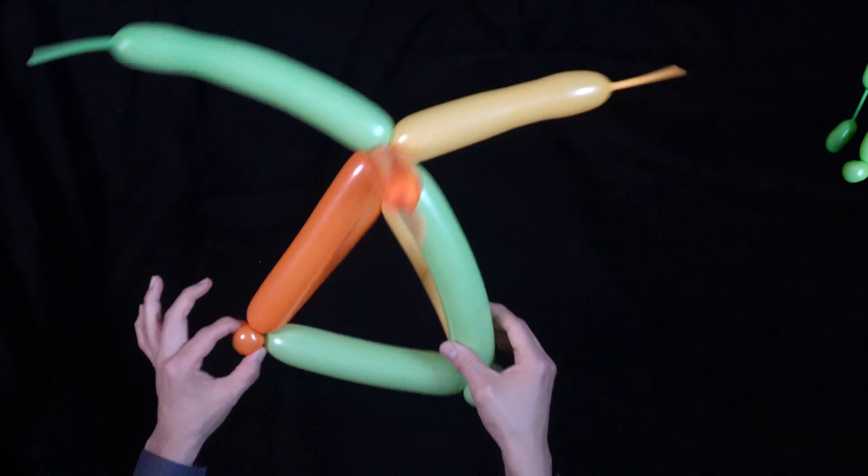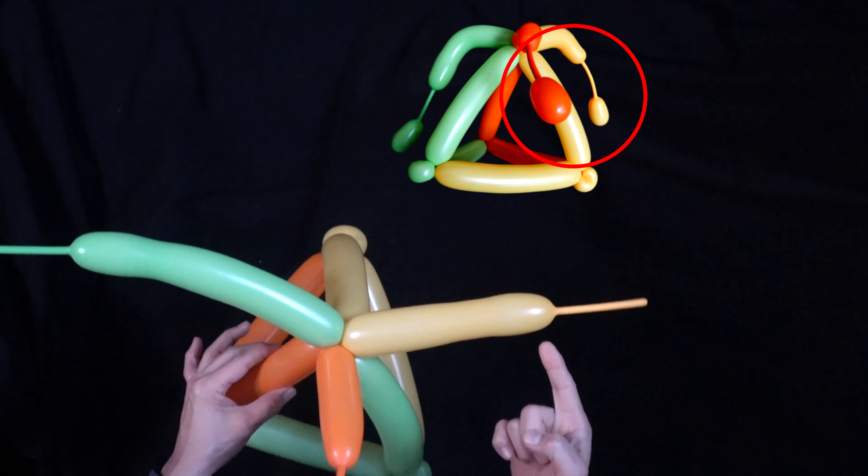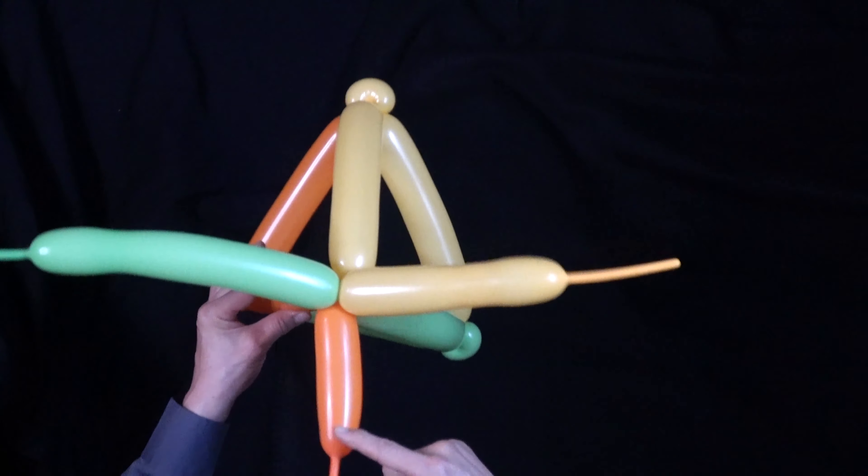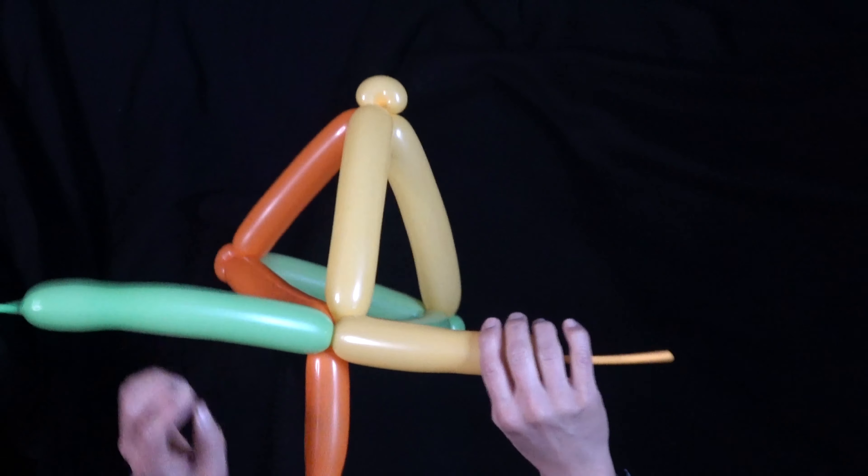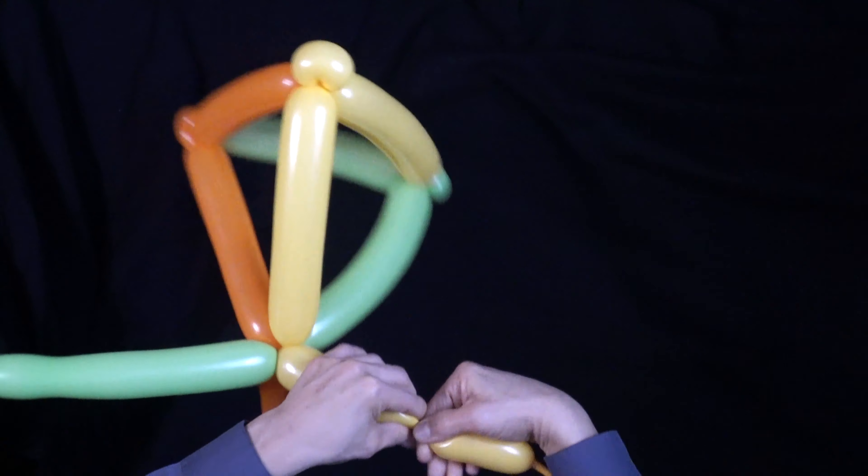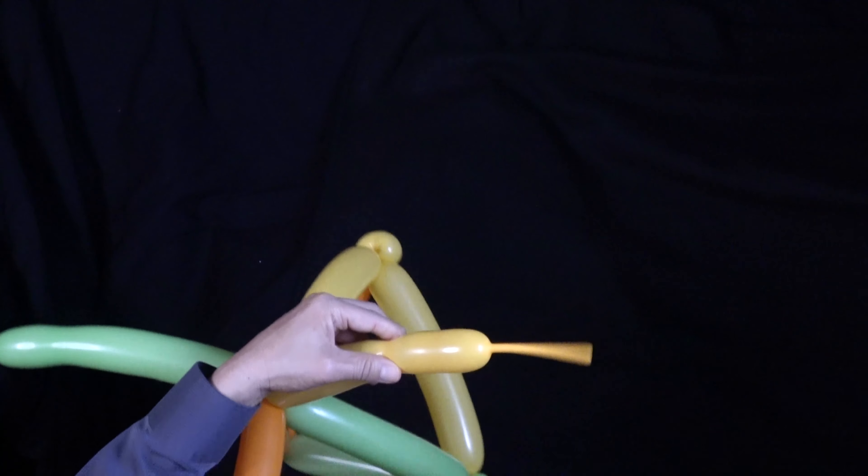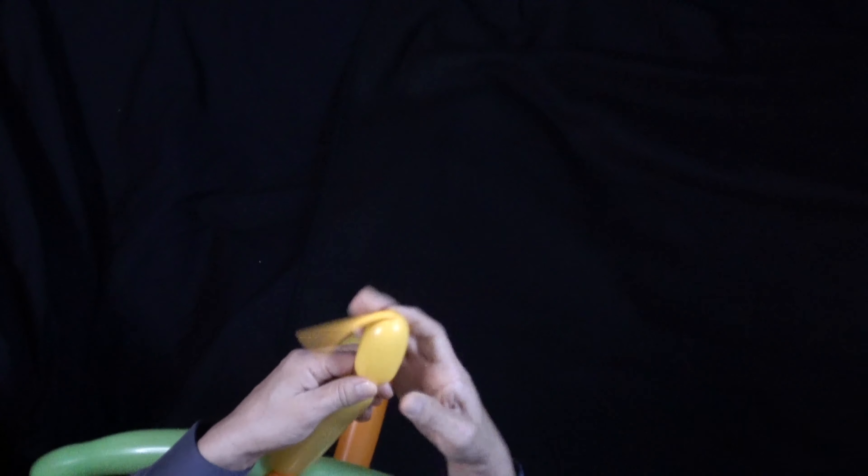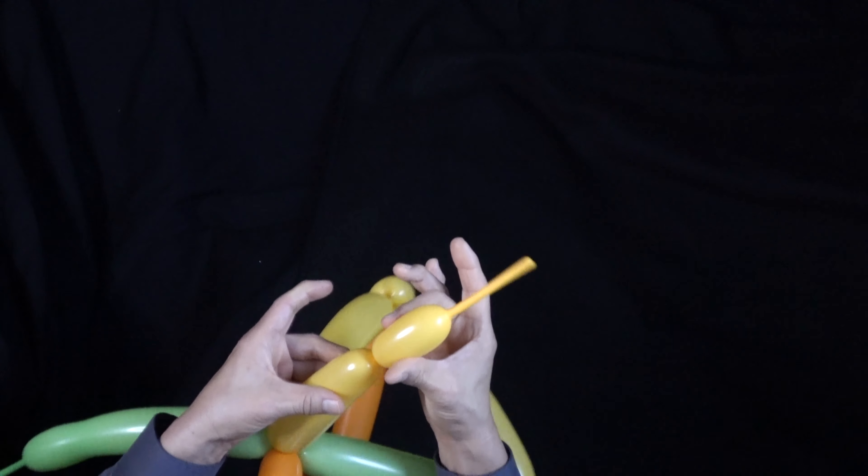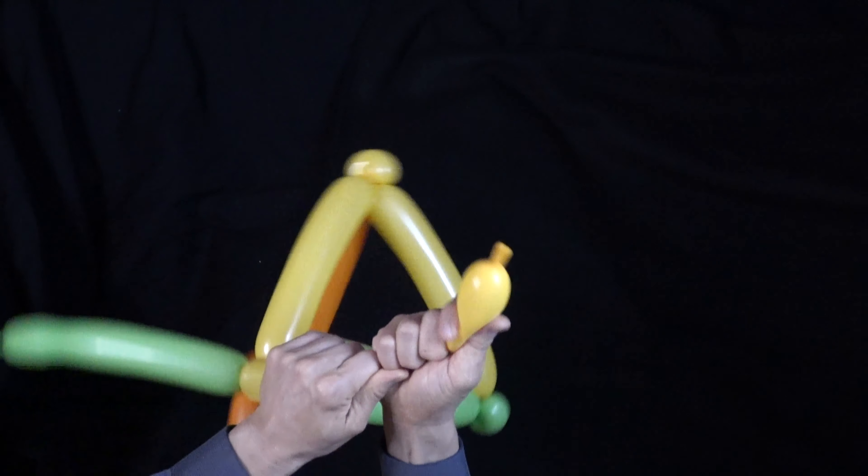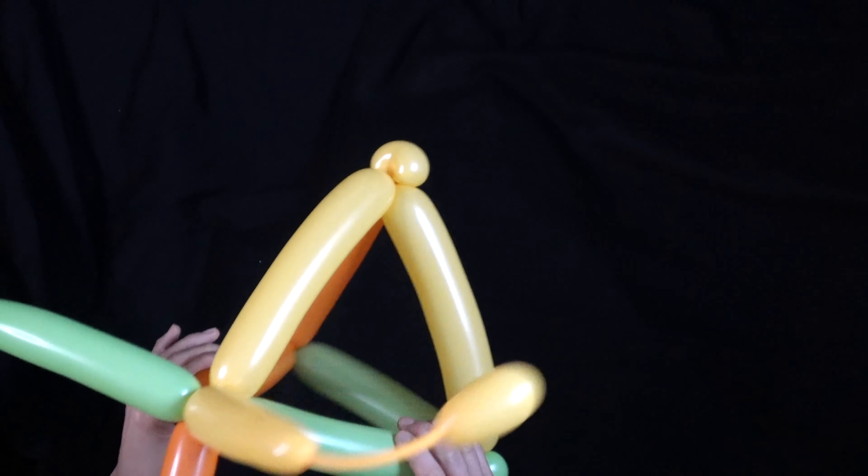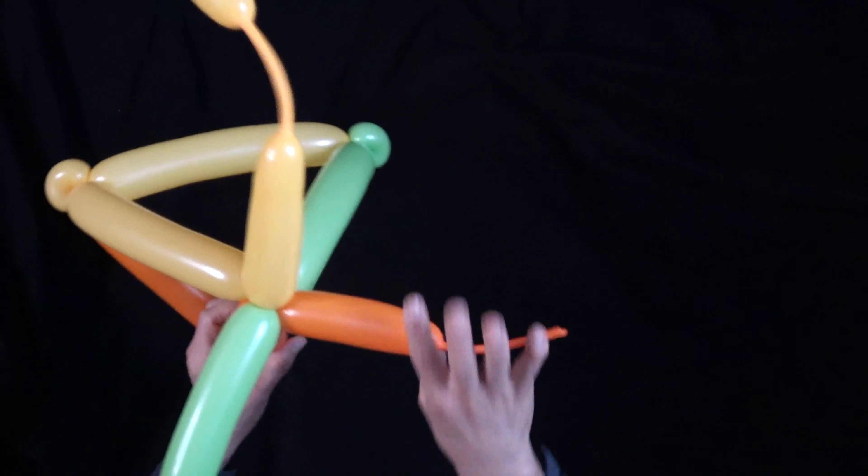The Jester's hat has these tassels, so we're going to make tassels for each one here. Again, my green one is bigger, my orange one is shorter, but that's okay. We're going to take the yellow here because it's not as crucial for the center part to be even. You just want the tassels to be fairly even. Make a basic twist here and then squeeze this to the end of the balloon. That gives you your Jester tassel.